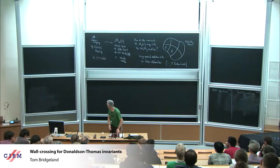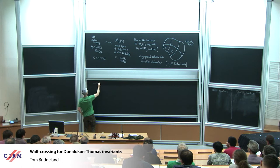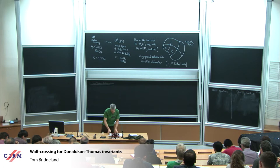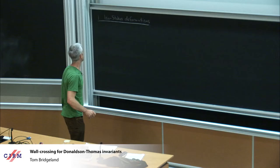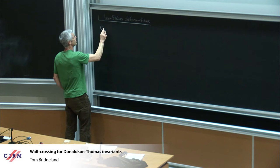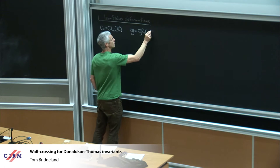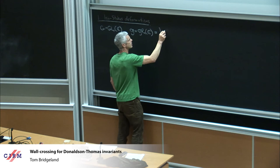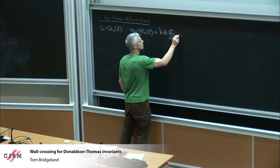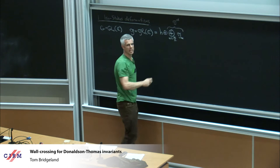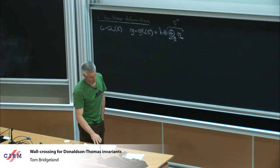Let me say something about iso-Stokes deformations, which Claude also talked about this morning. My group is going to be GL_N(C). The algebra is of course the algebra of N-by-N matrices. I want to split this for its root decomposition. Here's the Cartan — the diagonal matrices — and I call this bit G_od, meaning off-diagonal: matrices with zero diagonal parts.